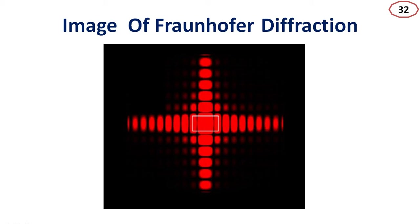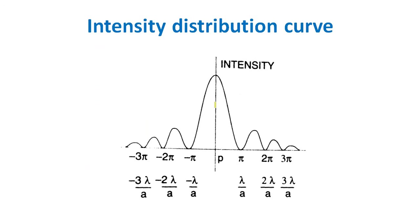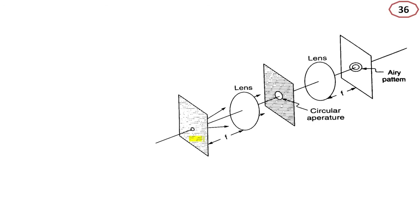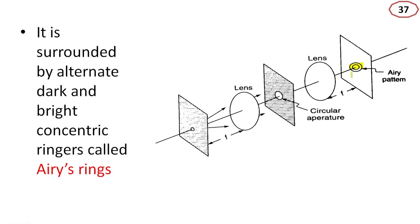This is for a rectangular aperture. If we are using a circular aperture, the diagram will be different. We will get an intensity distribution curve. For a circular aperture — diffraction by circular aperture — a circular pattern is formed, known as the Airy pattern. The diffraction pattern due to a circular aperture consists of a central bright disk called the Airy disk, surrounded by alternate dark and bright concentric rings called Airy rings.